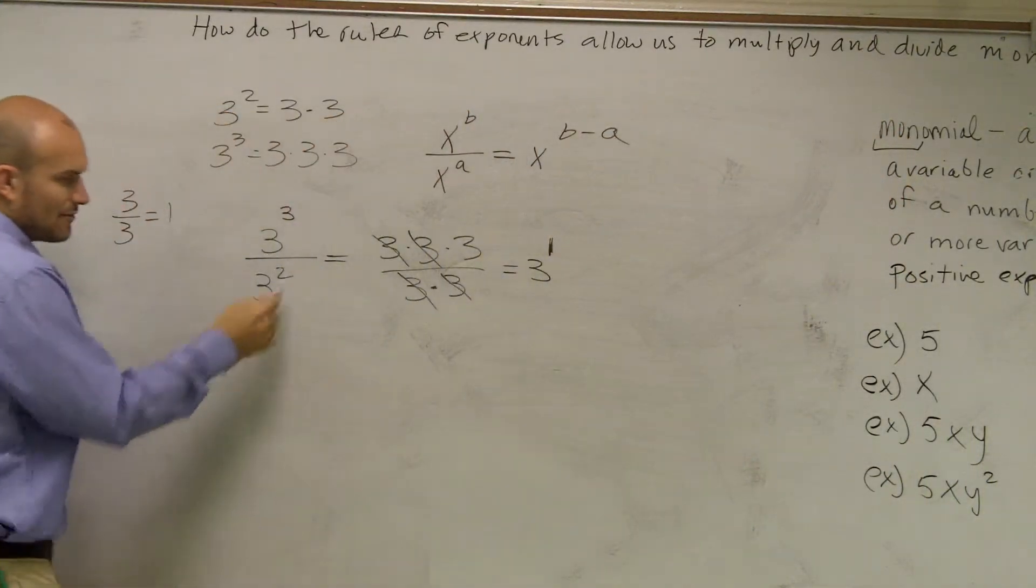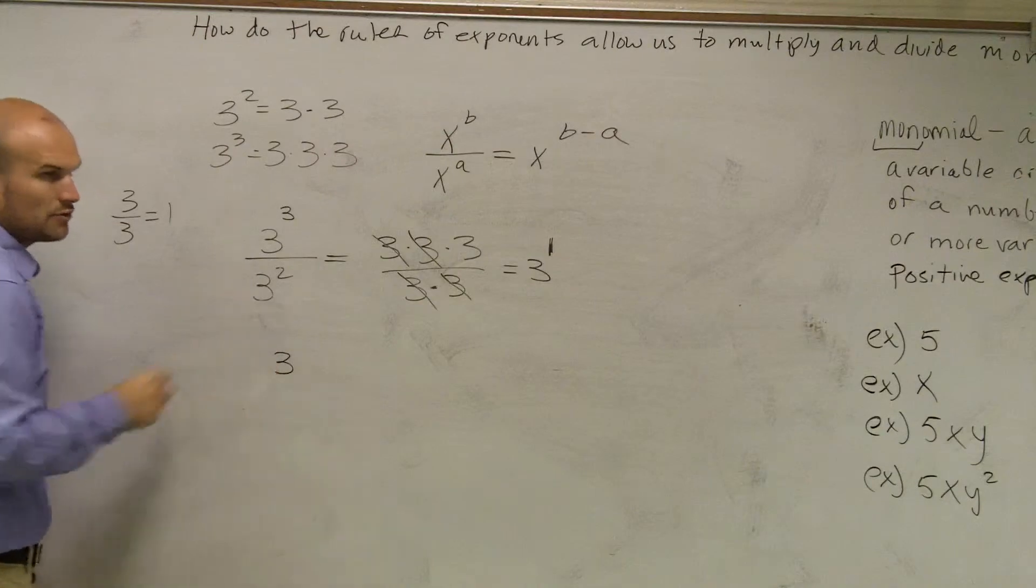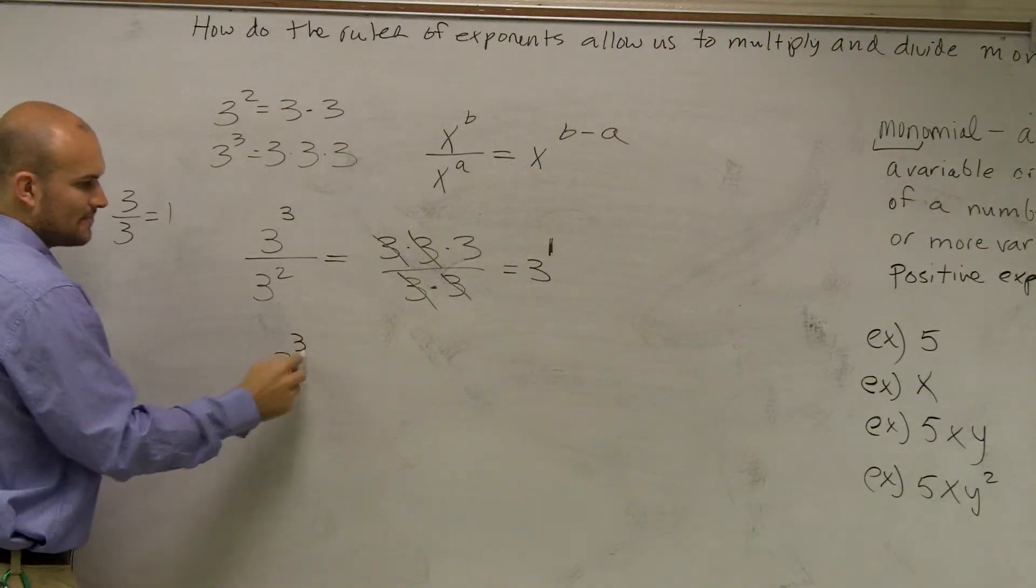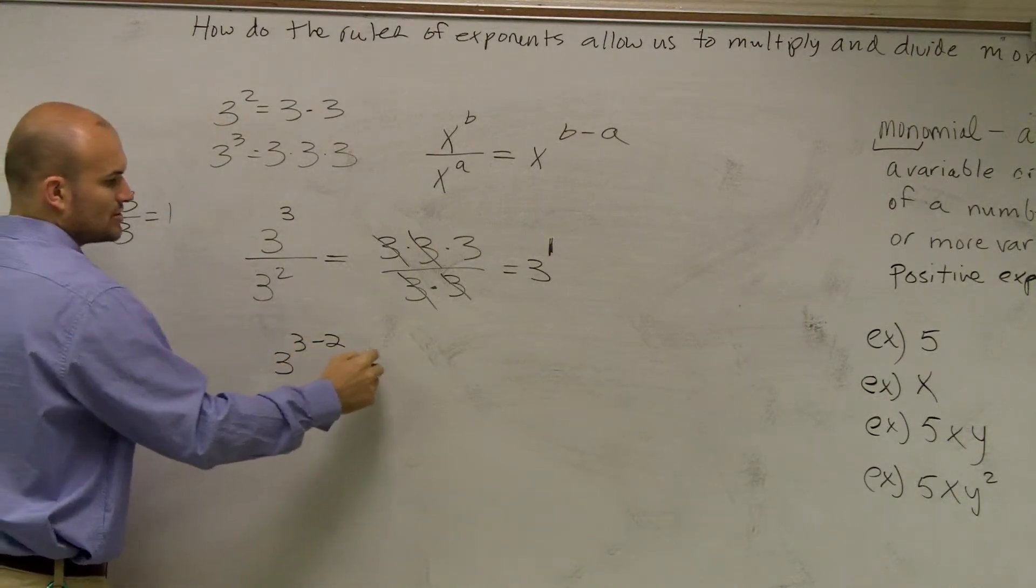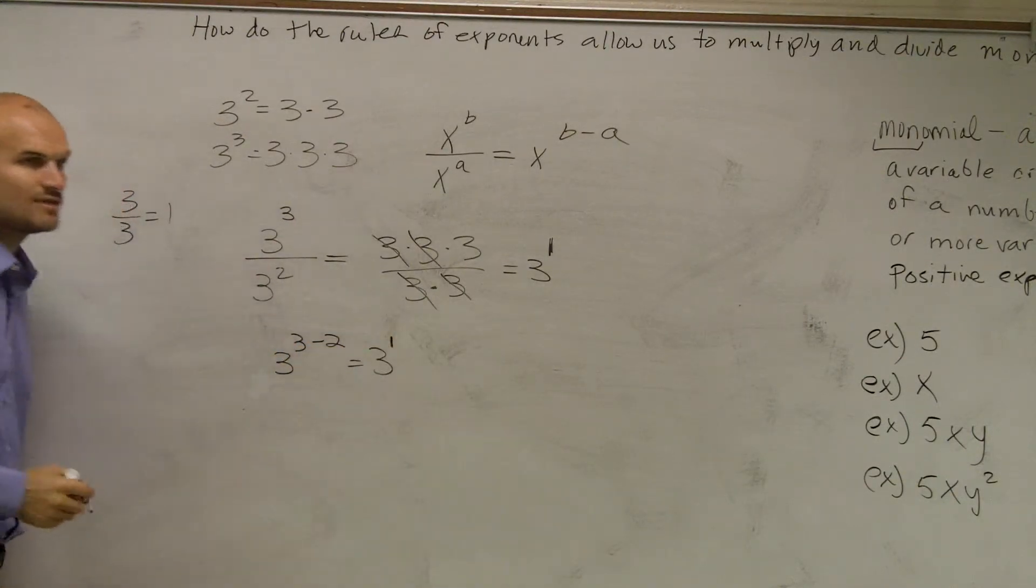Now, does this follow the rules of subtracting the exponents? Well, rather than doing it like this, if I follow the rules of exponents, I could take 3 cubed divided by 3 squared is going to be 3 to the 3 minus 2, which equals 3 to the first power.